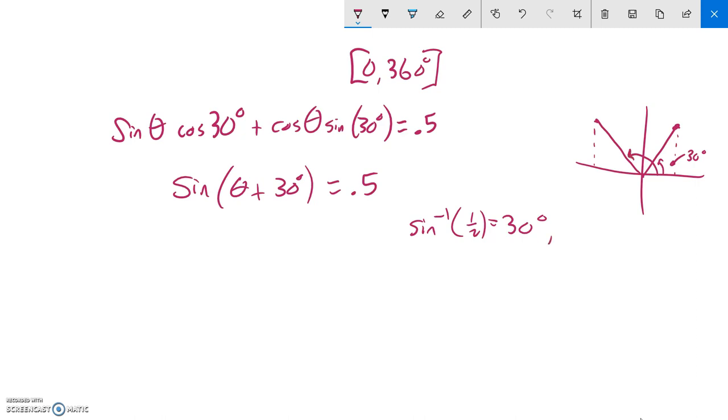So in order to get my other answer, the full thing is 180, so 180 minus 30 is 150. Those are my two possibilities for the angle. The angle, which is theta plus 30 degrees, would equal 30 degrees or 150 degrees. Both of those work.